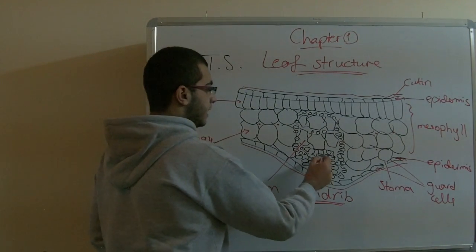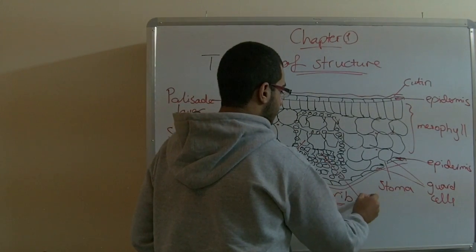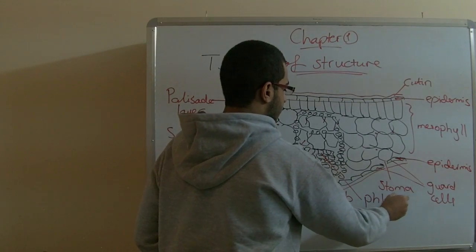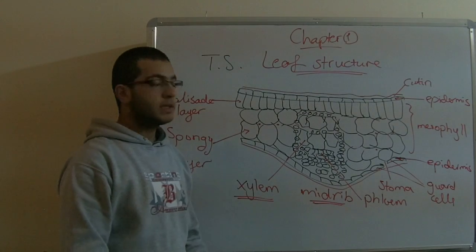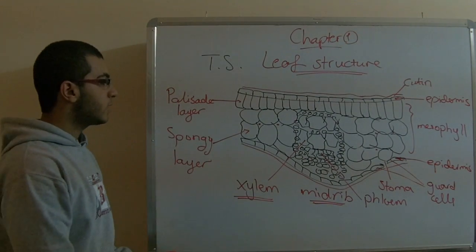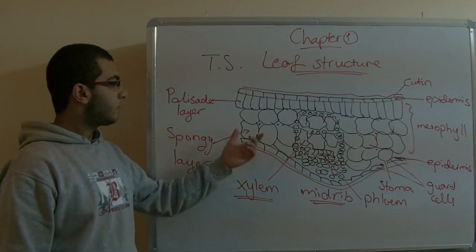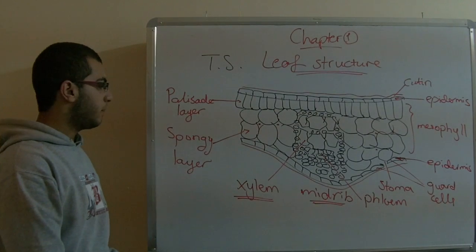The second part is the phloem. The phloem translocates the manufactured organic food from the leaf to the other parts of the plant.